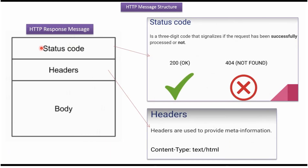Here you can see the structure of an HTTP response message. It has three sections: status code, headers, and body. The status code is a three-digit code which the server sends to the client, indicating whether the request was processed successfully. The most commonly used status codes are 200, meaning the request was processed successfully, and 404, meaning the requested resource is not found.